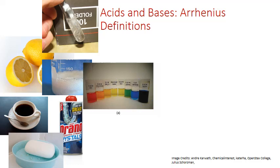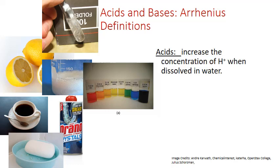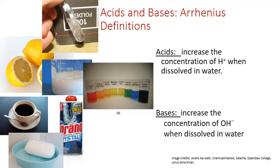The first person to recognize the essential nature of acids and bases was Svante Arrhenius. His definitions are based on his studies of electrolytes in solution. He found that acids increase the concentration of hydrogen ions when dissolved in solution, while bases increase the concentration of hydroxide ions.